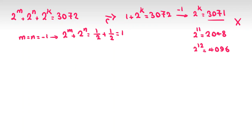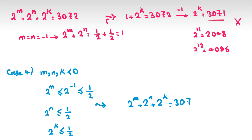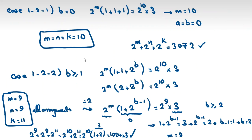Case 4: all of them are negative. Then 2^m, 2^n, and 2^k are each less than or equal to 1/2, so their sum is less than or equal to 3/2. But 3072 is much greater than 3/2 — impossible.